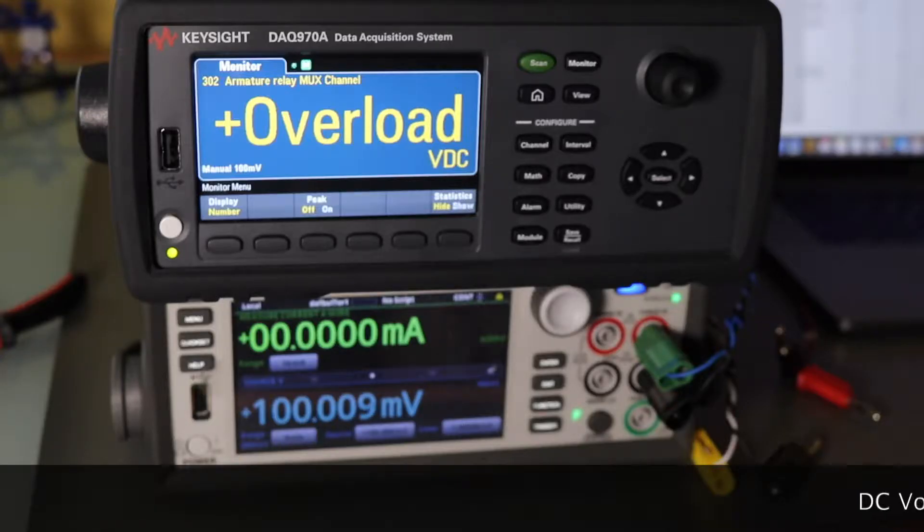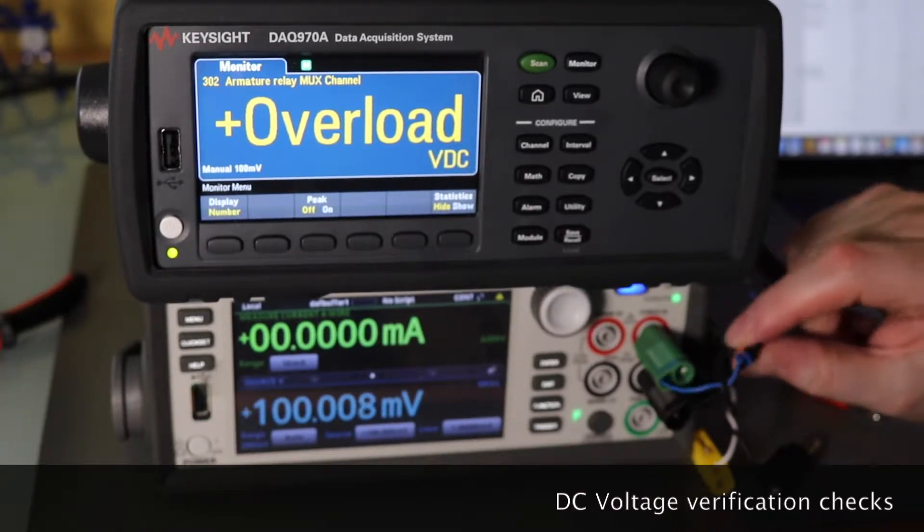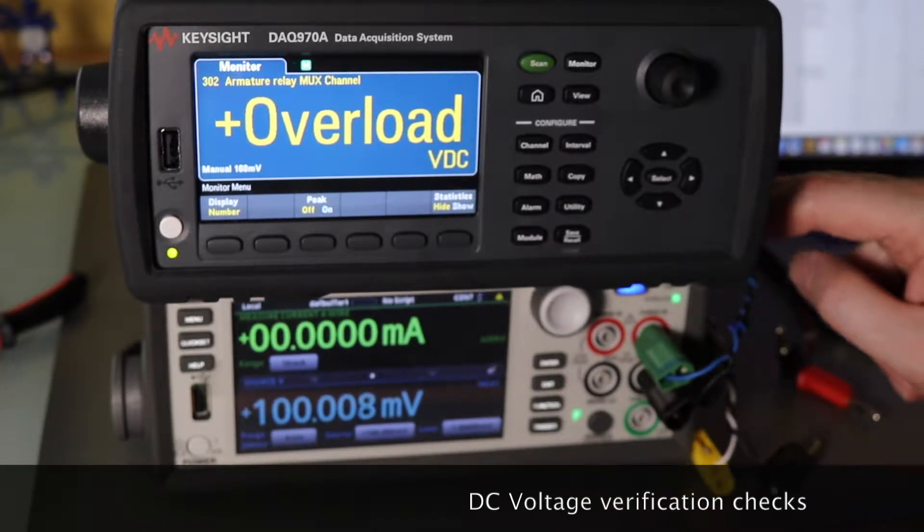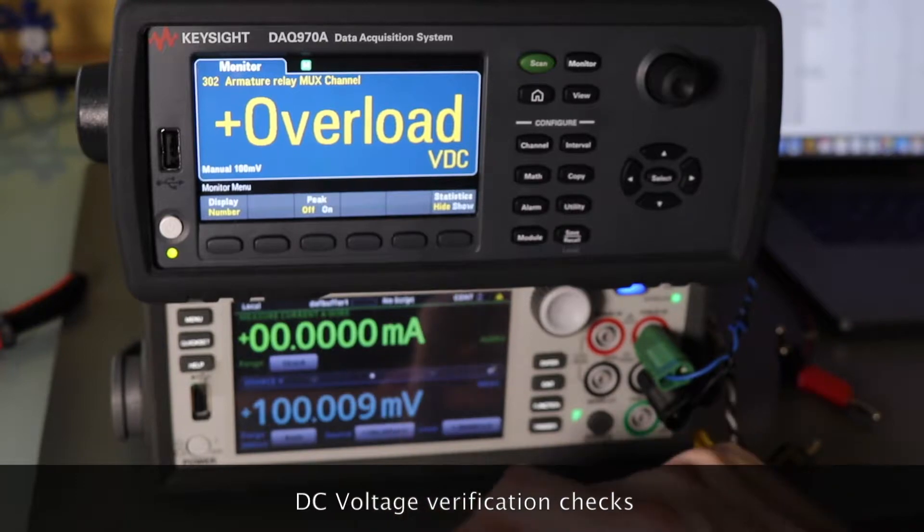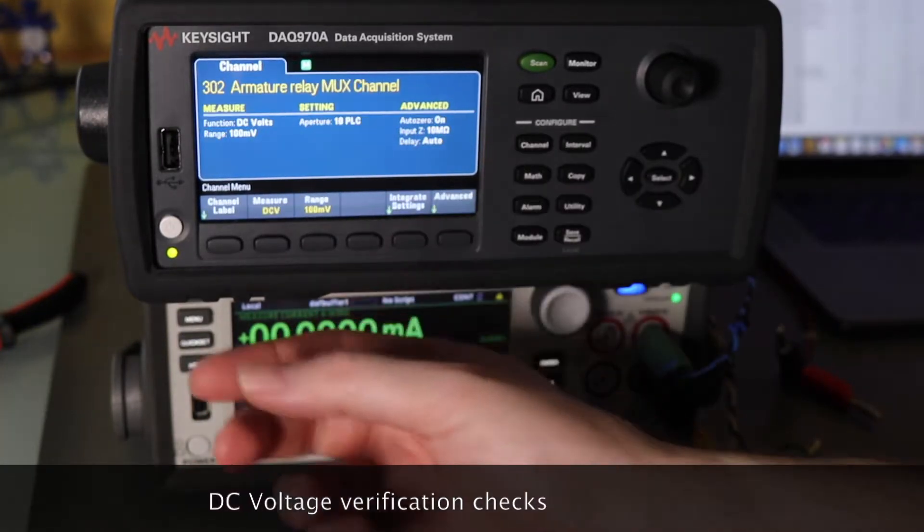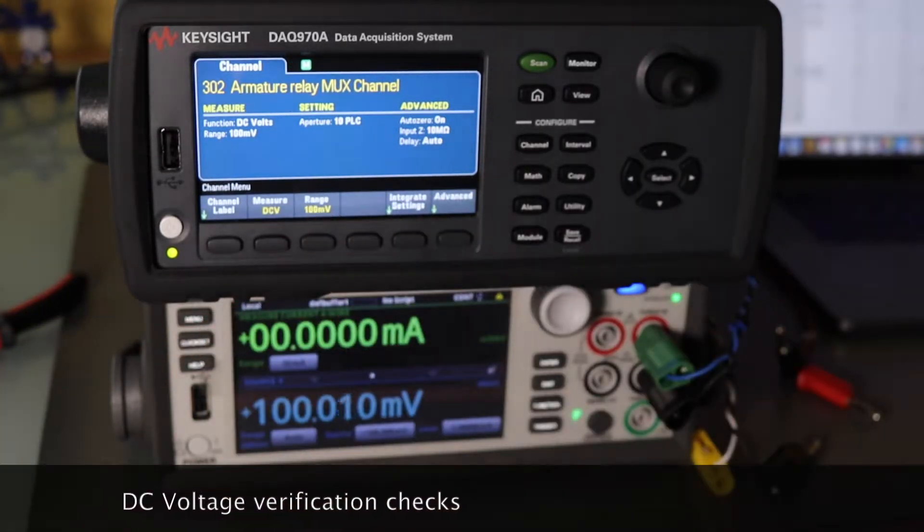So we have a little bit of an issue with the calibration. This is DC volts on channel 302 at the moment, it's wired as a twisted pair into a Keithley 2450 source meter, which is currently set to 100 millivolts. I've set this channel up to 100 millivolt range.